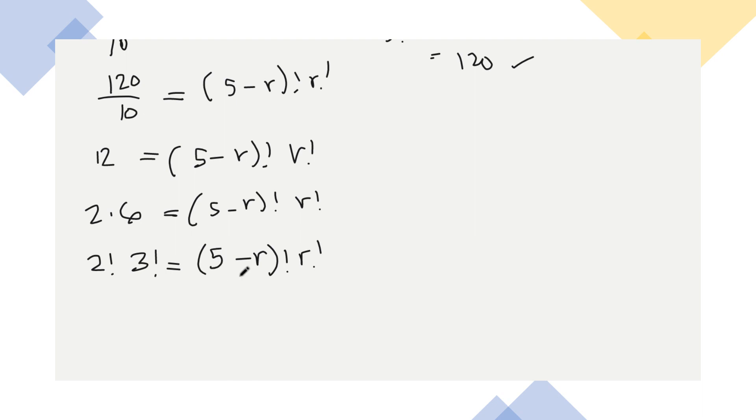Now, the answer will be, there will be 2 values of r. So ang answer talaga natin dito, we are looking for the value of r. 2 factorial is equals to (5-R) factorial R factorial. So there will be, ganun yung sagot natin. Or, ang isa, 3 factorial is equals to R factorial, I mean. Yan. Kasi nga, (5-R) factorial, kunyari 3, 5 minus 3, that will be 2 factorial. So ganun siya.